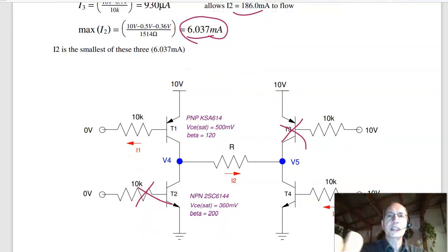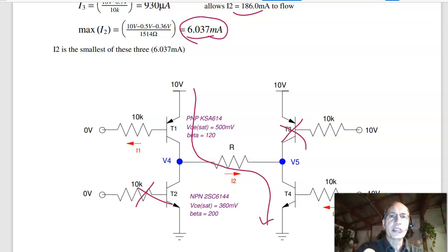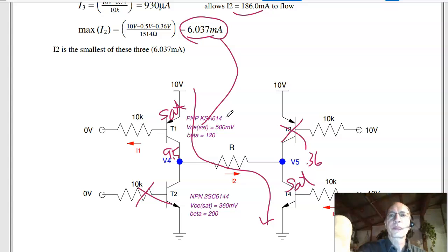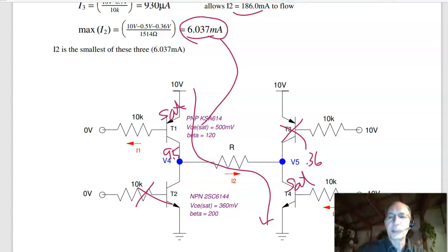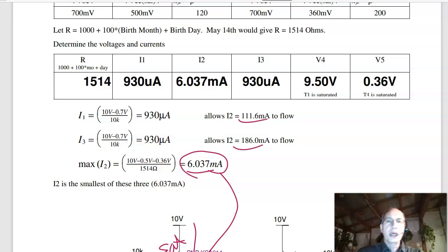So what that tells you is that the current is 6.037 milliamps. That says that T1 is saturated, T4 is saturated. When they're saturated, the voltage across T1 is 0.5 volts, making this 9.5. V5 is 0.36, and the current is 6 milliamps. The 6 milliamps is going to depend upon what you pick for R. But that's what you should get for problem number two.